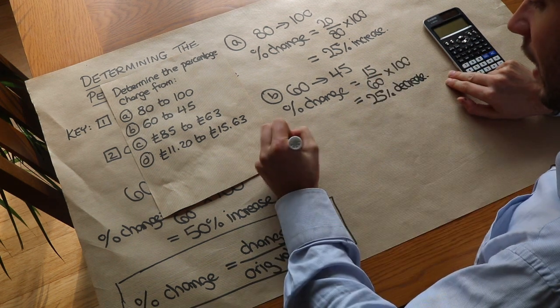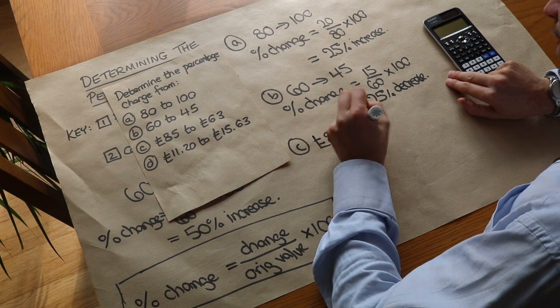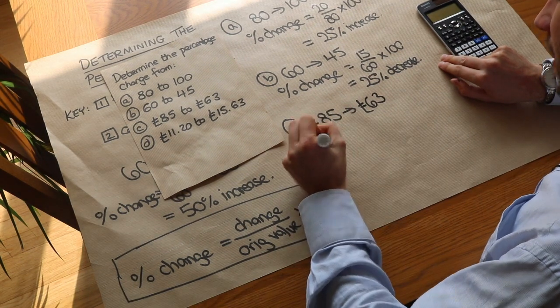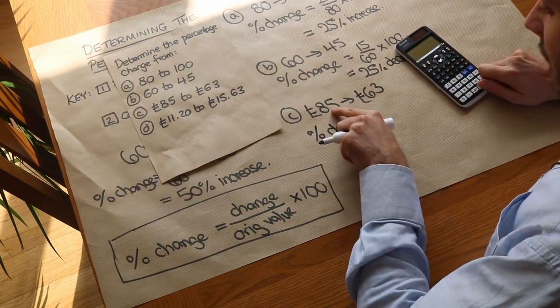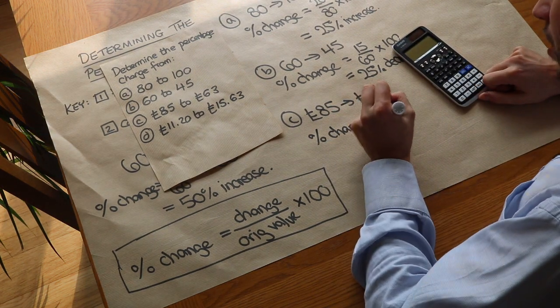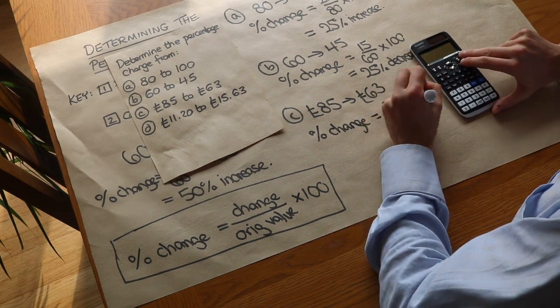What about C? 85 pounds to 63 pounds. This one we might need a calculator for. The percentage change is the actual change. Well, we just do 85 minus 63 to get the difference, so it's 22, and we do that as a fraction of the original amount of 85 and times by 100.